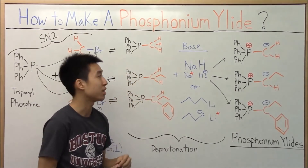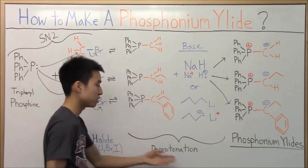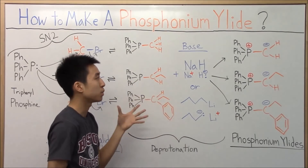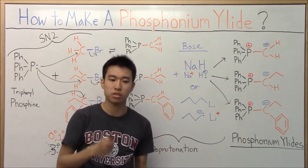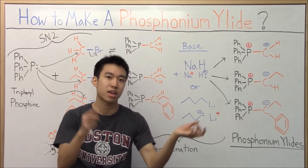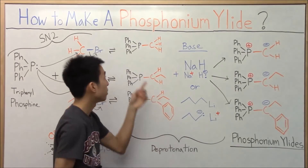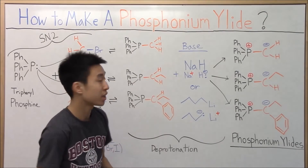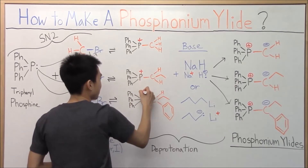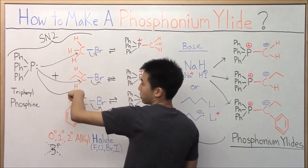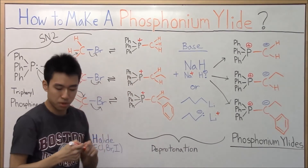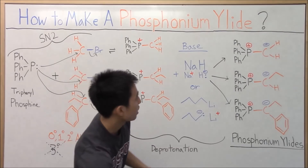If you said base, then you are correct. What we need to do now is a deprotonation — removing a proton or hydrogen with a base — so we can actually create a phosphonium ylid. Remember, an ylid is just a molecule with two charges, a positive and negative, on adjacent atoms. But there's no negative charge yet. Phosphorus was neutral before — it lost electrons when it formed the bond with carbon — so that's why the phosphorus is positive now. But carbon needs a negative charge so that it can become an ylid.